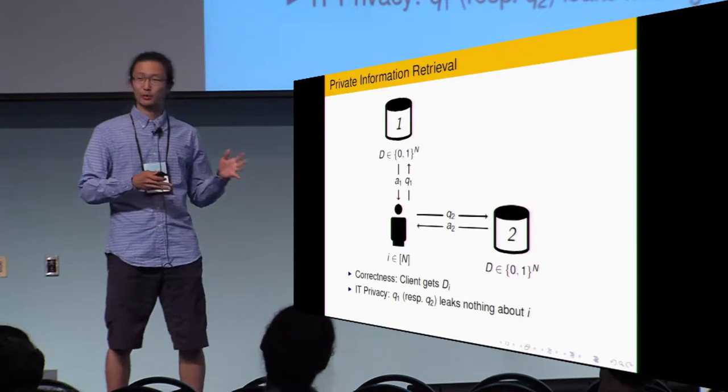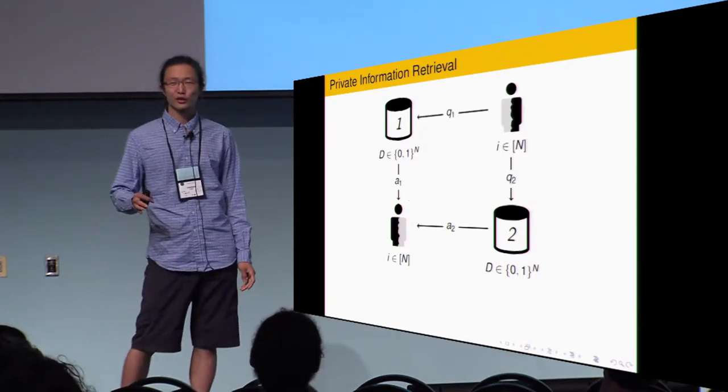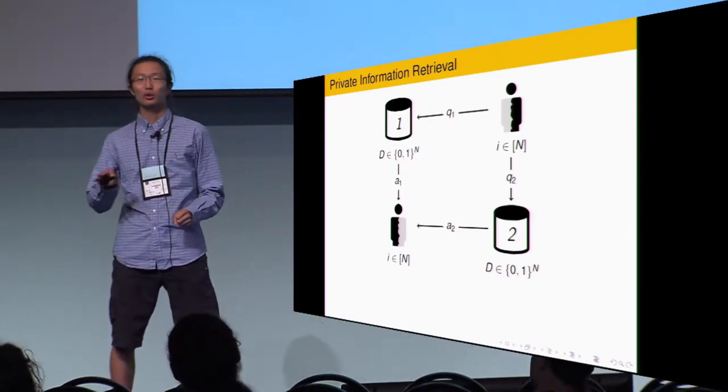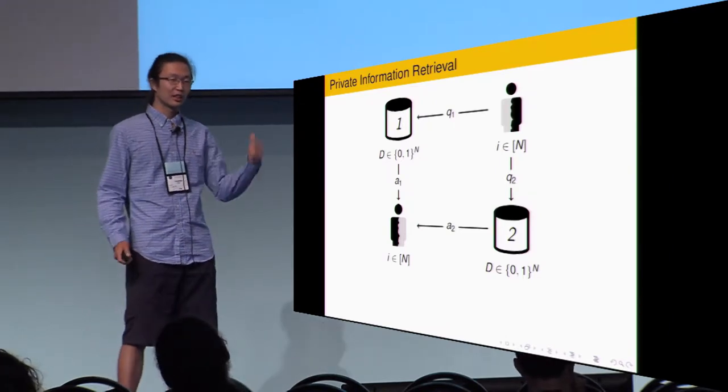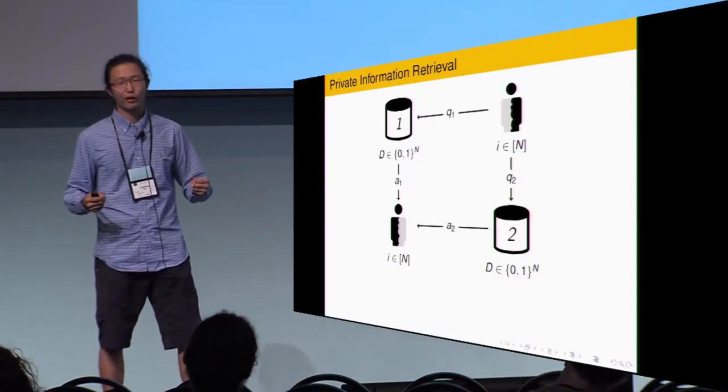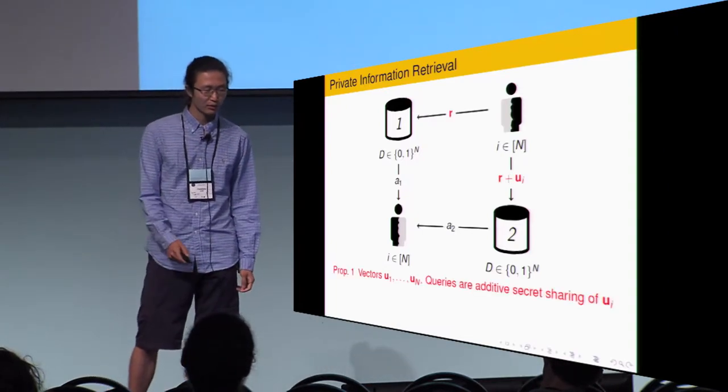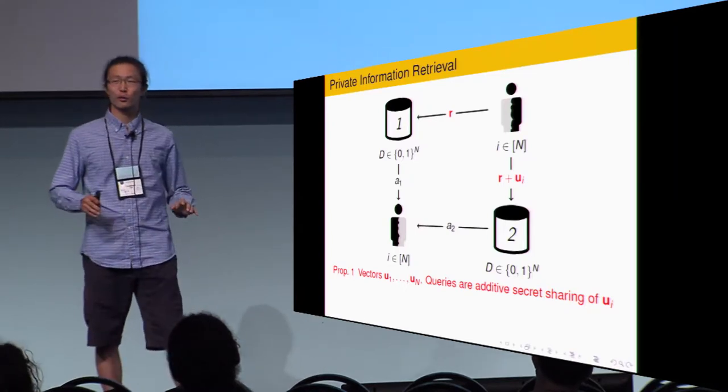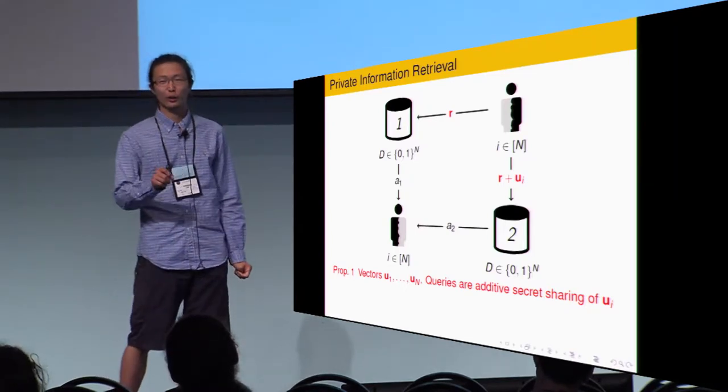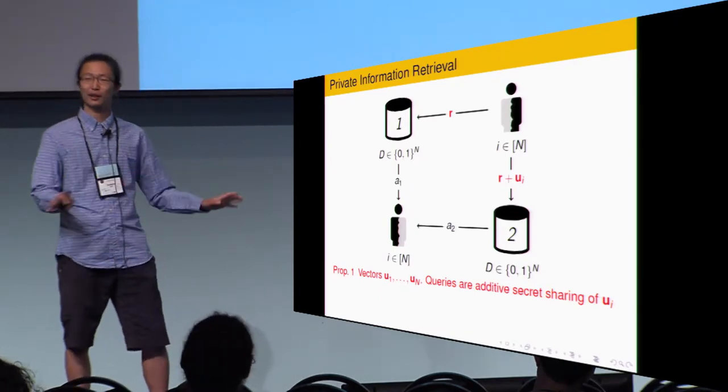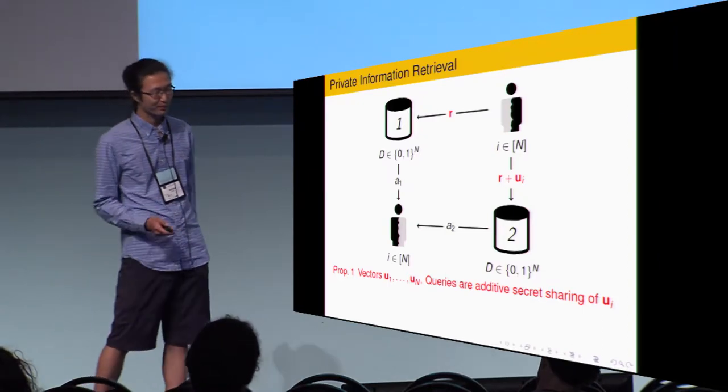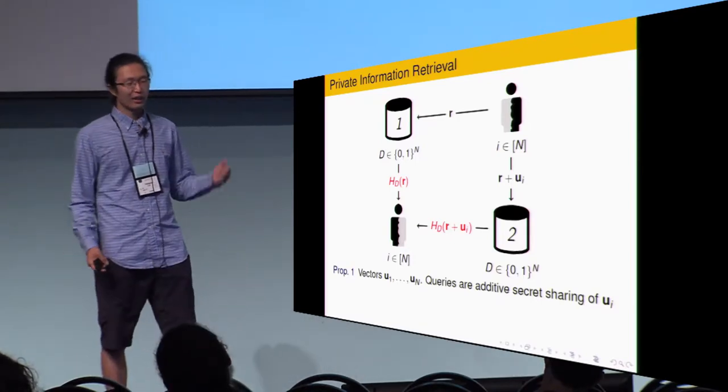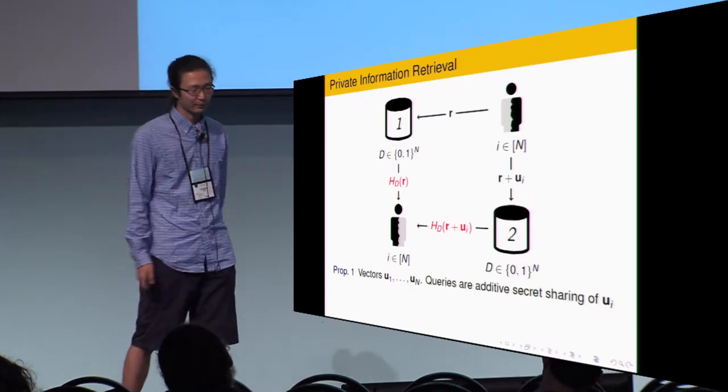So, we would like to gradually transfer this picture to a CDS. The first thing I'd like to do is to split the client into two pieces. The one on the top right, he's only taking care of generating queries and sending to the server. The one on the bottom left, he gets the answer from the server and he outputs the i'th index. So, the first property we assume on the PIR is that the queries actually forms an additive secret sharing of a vector u_i. Here u_i to u_n, it's just some public, everyone know, a vector.